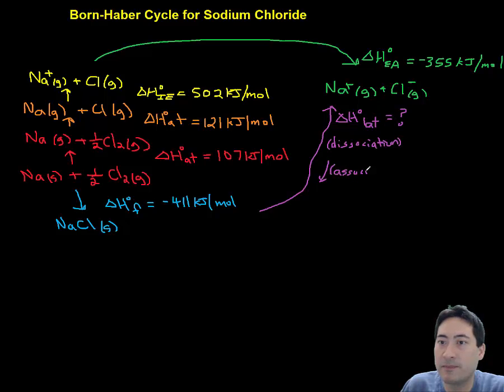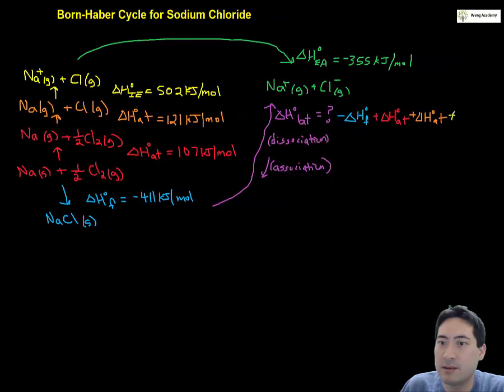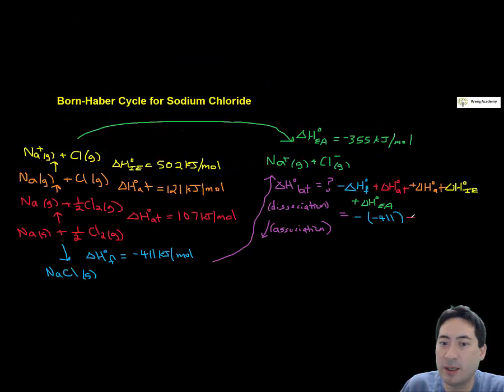So we can then add all those things up according to Hess's law. Be careful of the states and the signs. Make sure it's logical going by the direction of flow like you've done in the previous enthalpy calculations. And we add all those up and it's 786 kilojoules per mole.